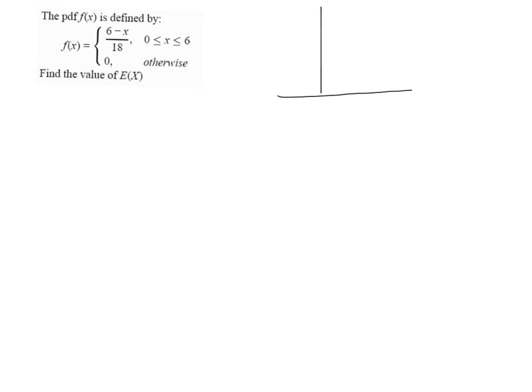We have this PDF and I'm going to start off by sketching it. You'll see in a later video that you can find the mean by sketching when the PDF is symmetrical. However, this is a straight line so it's not going to be symmetrical. Substituting in the limits: when X is 0, we get 6 over 18, which is one third. When X is 6, 6 minus 6 is 0. So we have a straight line going down from one third to 0 at X equals 6.